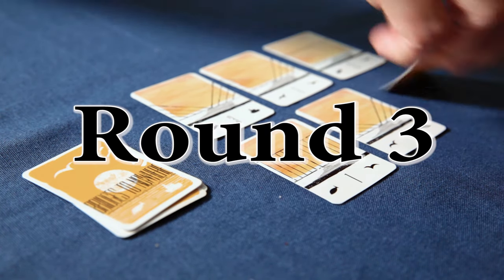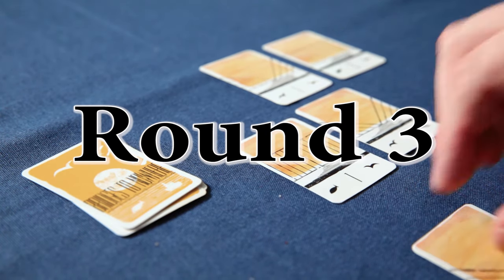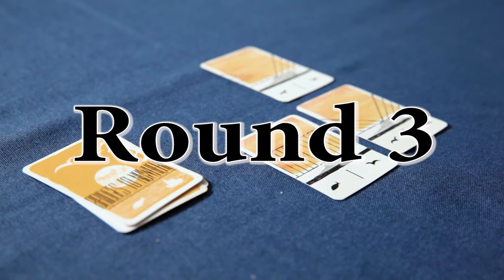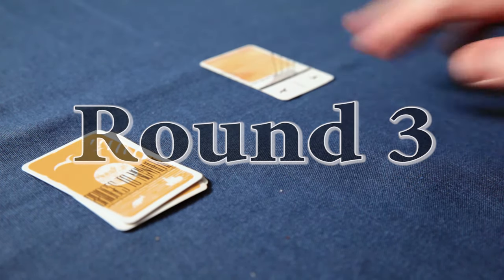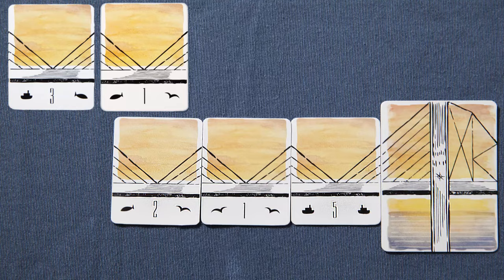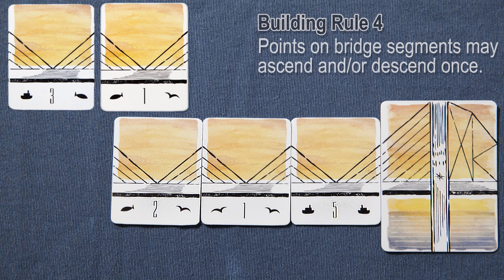We alternate who gets to draft first, and once we're done, we deal out the last cards in the deck. Here's an important rule involving building segments to keep in mind. The points on a bridge segment can go in ascending and or descending order, but only once each.